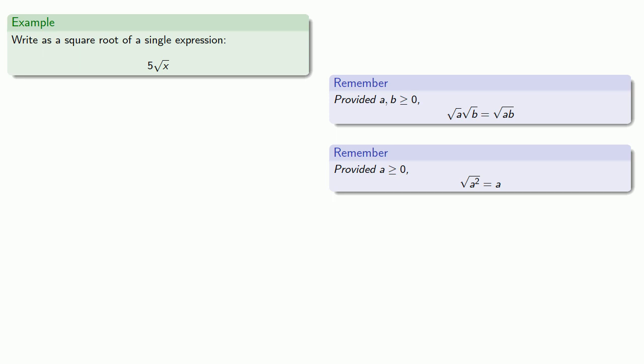For example, if we want to rewrite this as the square root of a single expression, so 5 we can bring under a radical as square root of 5 squared. And because we have a product of square roots, it's also the square root of the product.